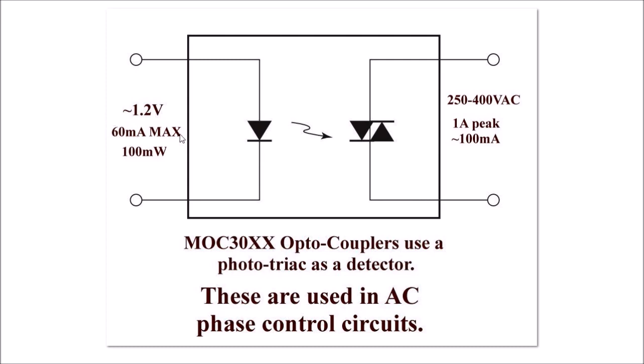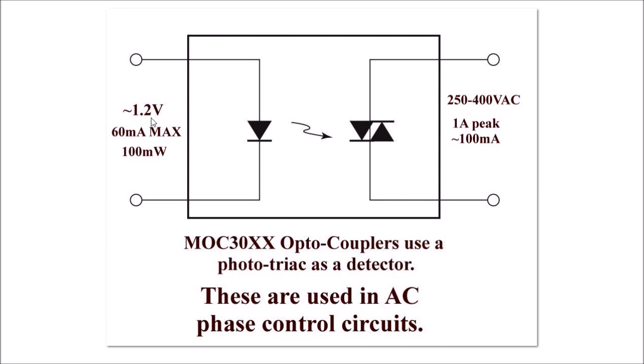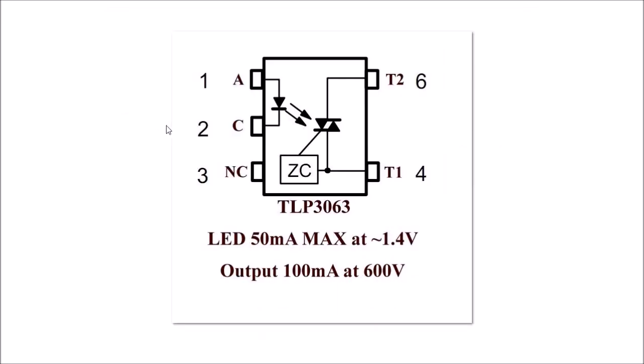Rated at 60 milliamps maximum, or 100 milliwatts dissipation at around 1.2 volts. These things, depending on current, run from 1.2 to 1.4 volts usually. Let's look at the TLP 3063. Again, it also has an LED emitter rated at 50 milliamps max at around 1.2 to 1.4 volts.